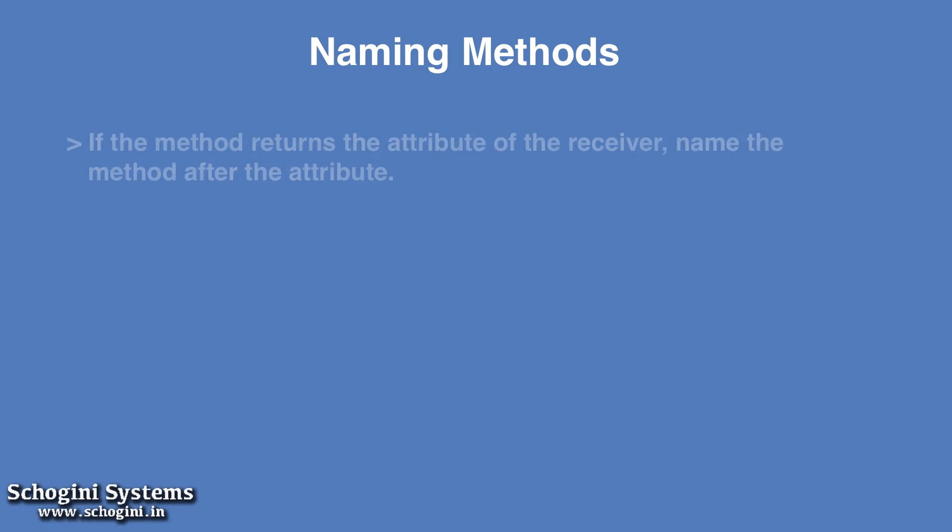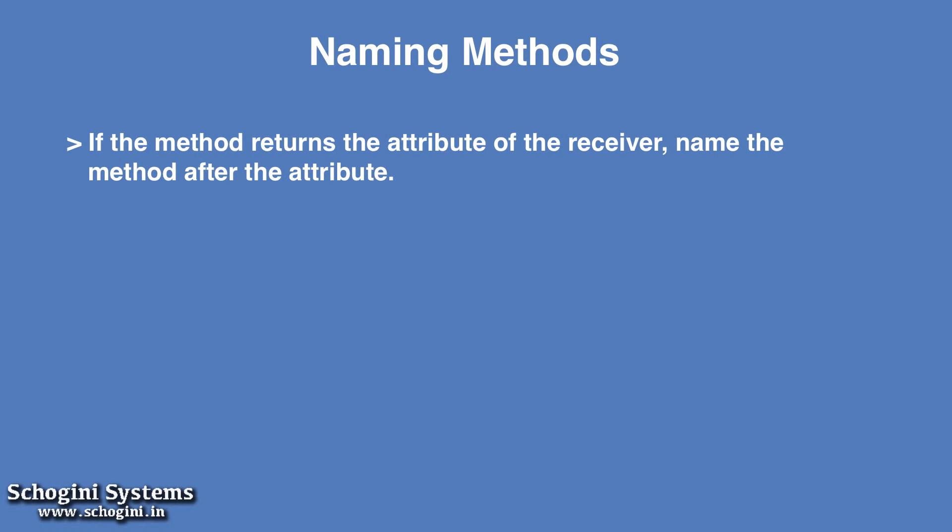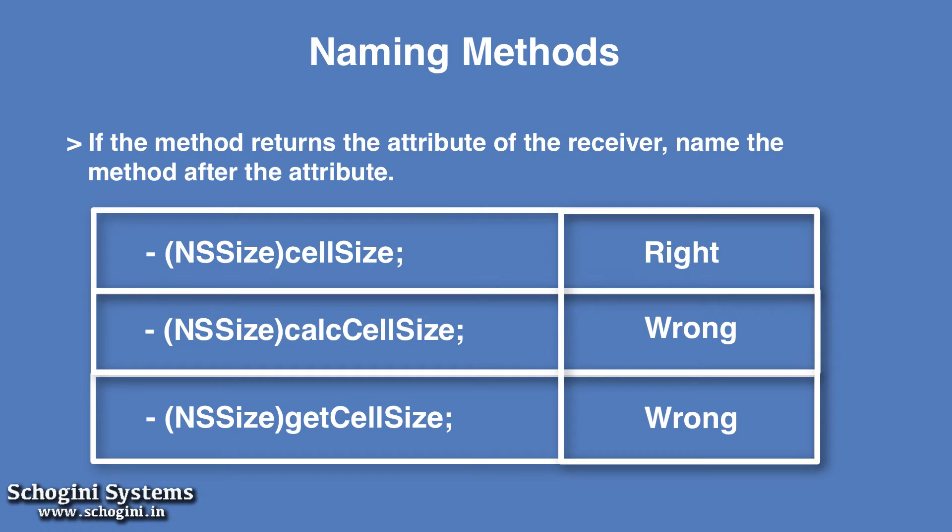If the method returns the attribute of the receiver, then name the method after the attribute, as shown in the example. In the first example, the naming convention is right. But in the second and third examples, the method names calc or get should come after the attribute name cellSize to make it comply with the naming convention.